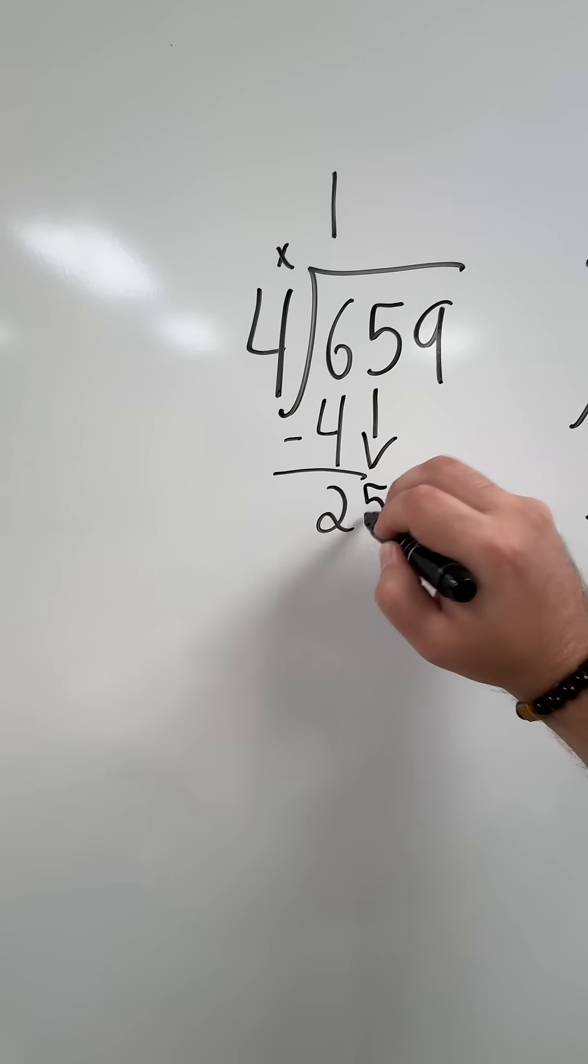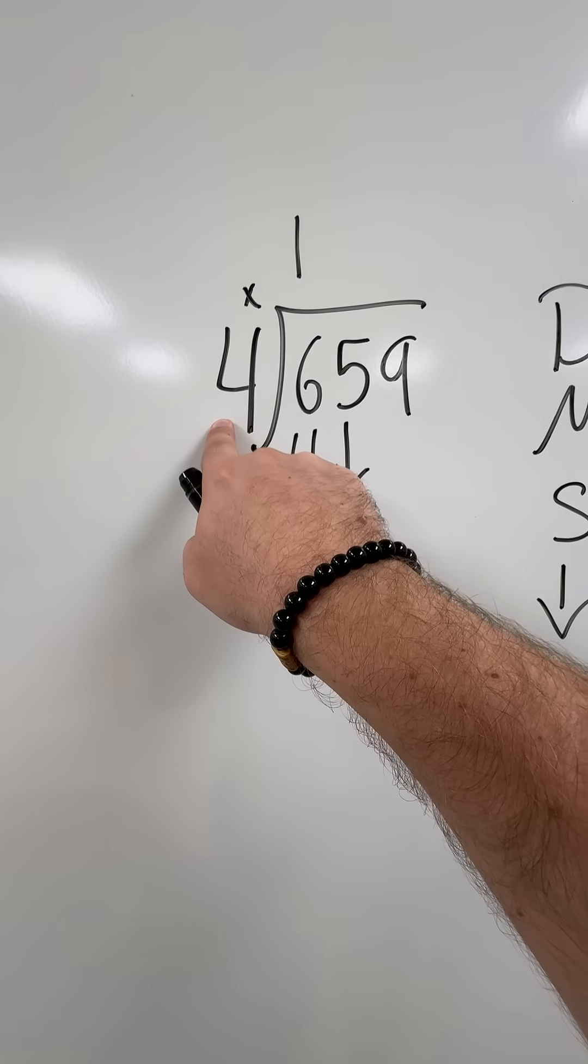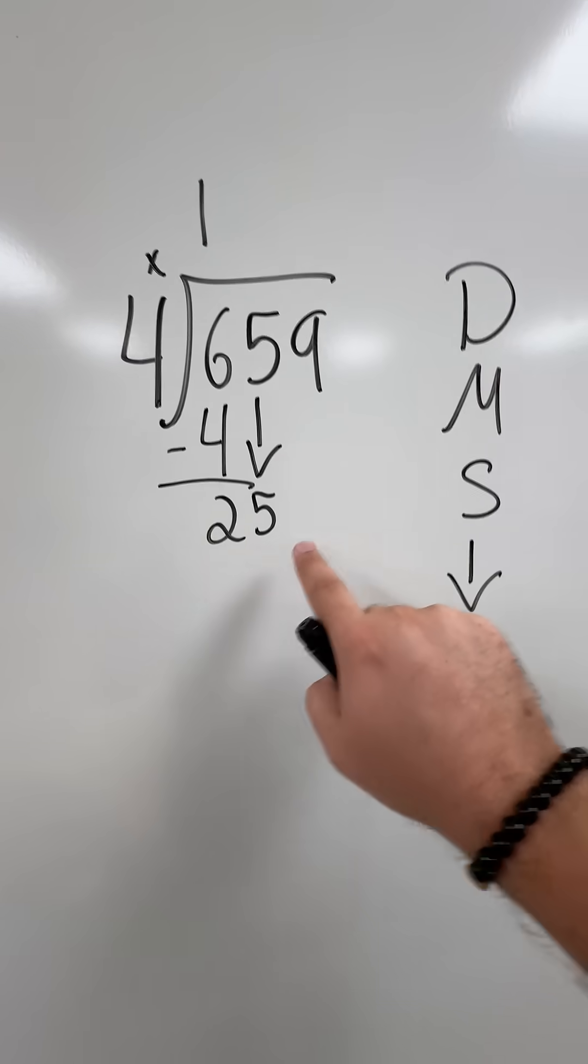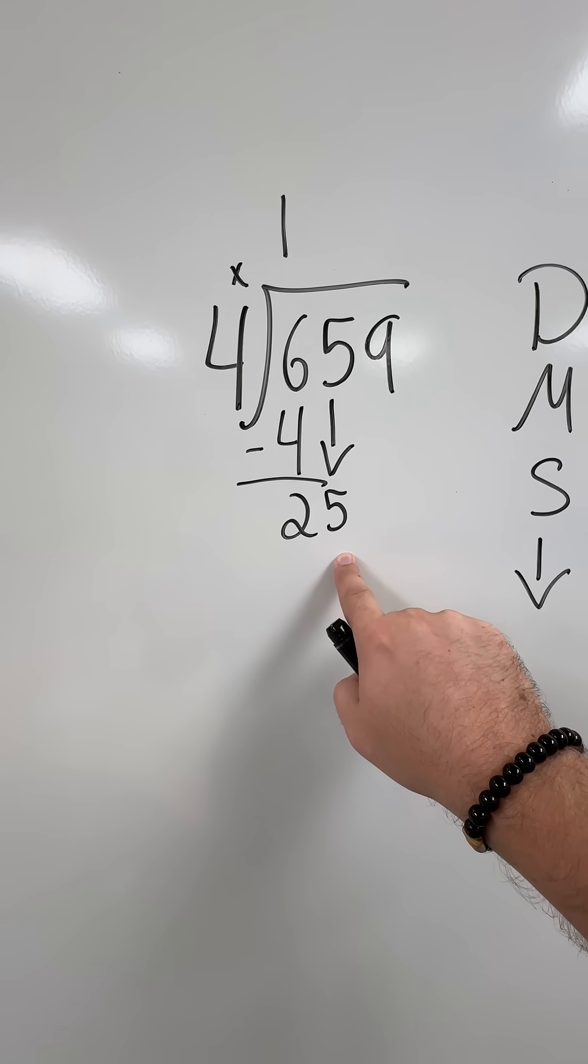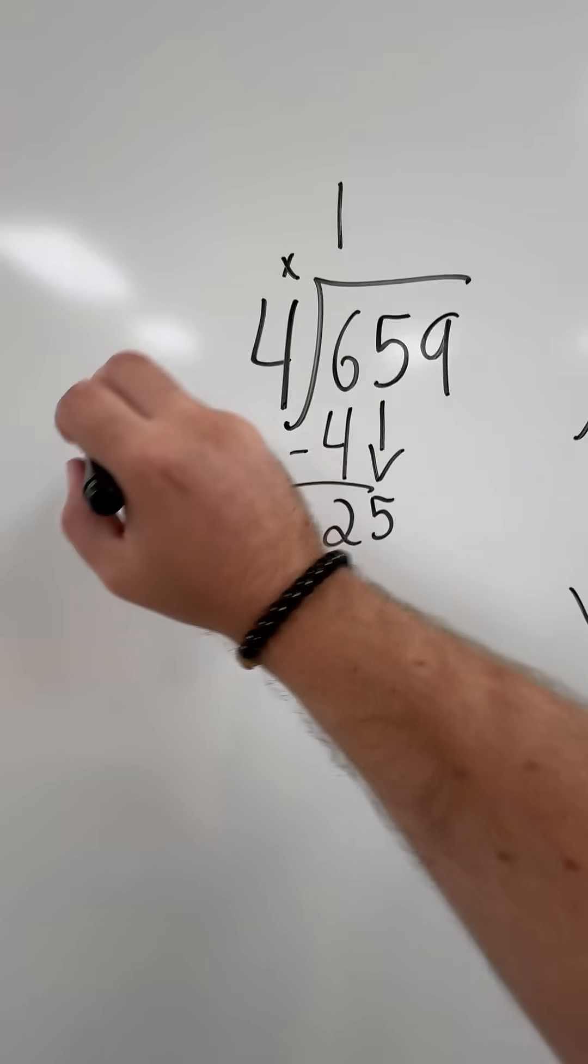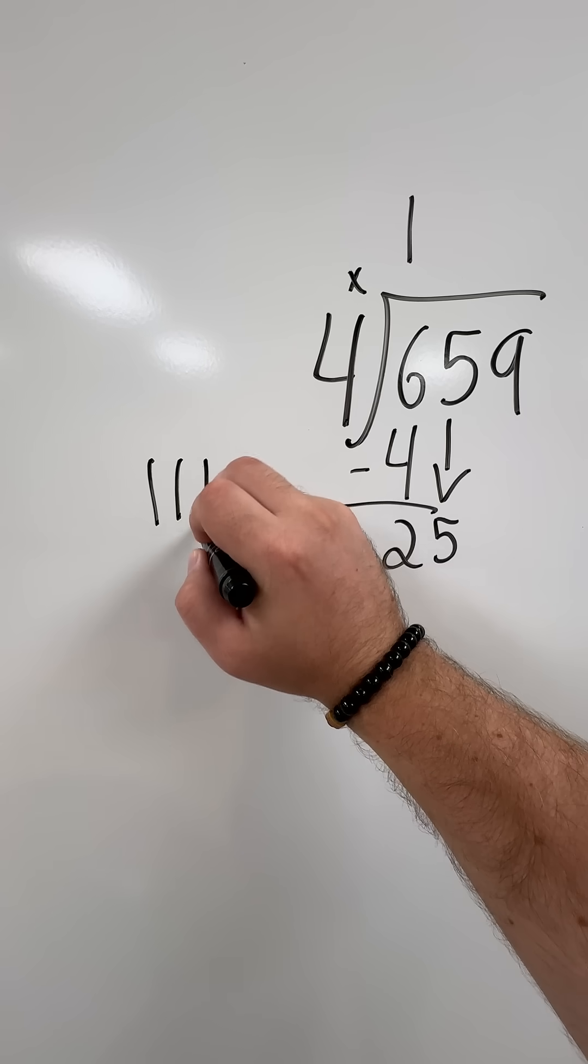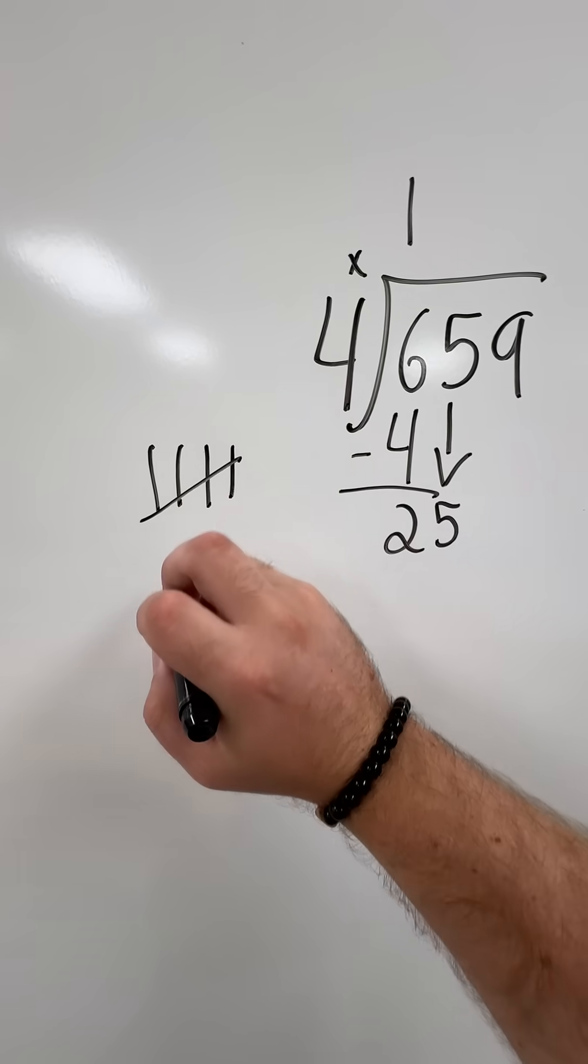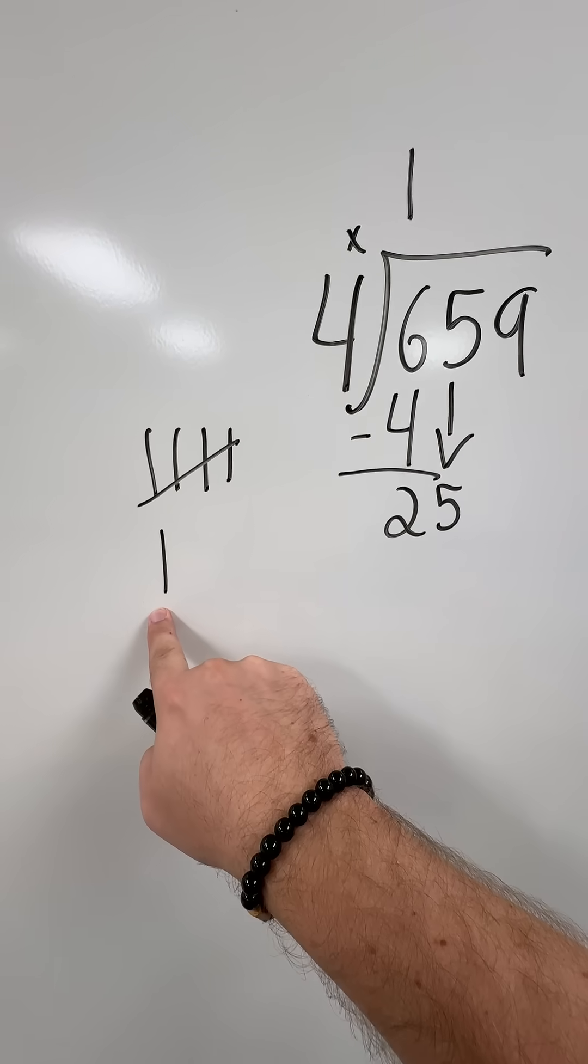So now I'm working with 25. I see how many times 4 can go into 25, and I count up by 4s: 4, 8, 12, 16, 20, 24. If I go one more time, it hits 28, which is over 25.